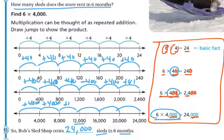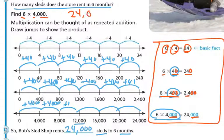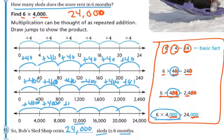If you know what 6 times 4 is — 6 times 4 is 24 — and I've got three 0s, my answer is going to be 24 with three 0s. It's sort of an easy way for you to do the mental math in your head if you don't want to necessarily do the number line.